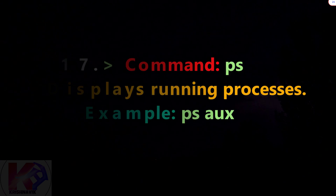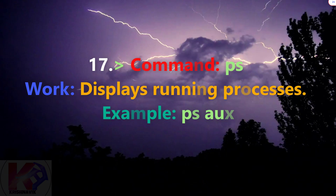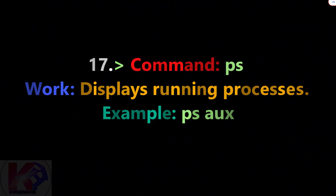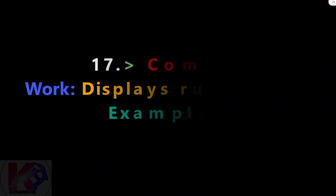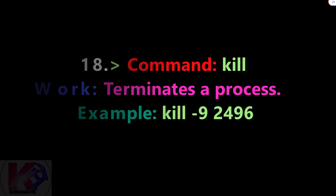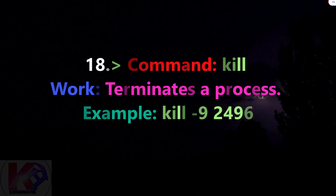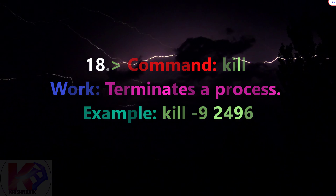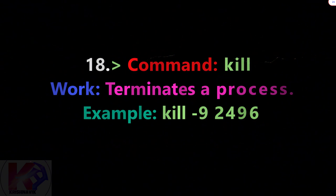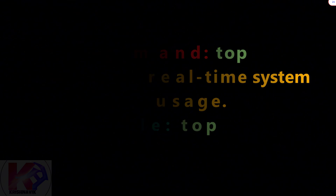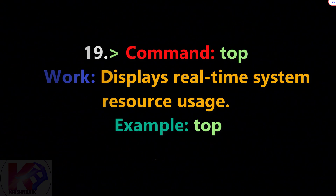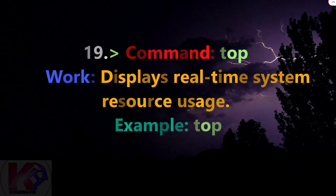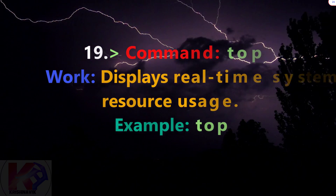Command ps: displays running processes. Example: ps aux. Command kill: terminates a process. Example: kill signal process_ID. Command top: displays real-time system resource usage. Example: top.